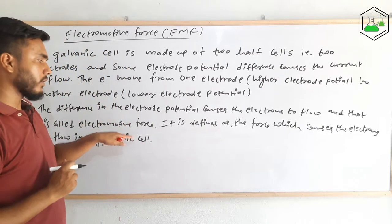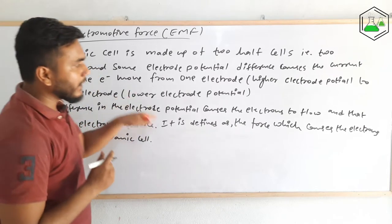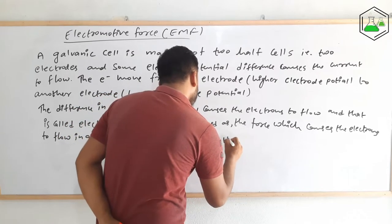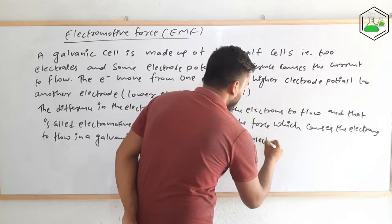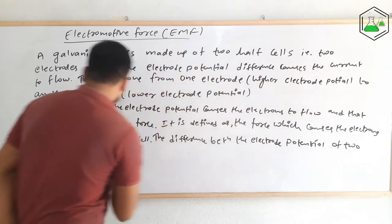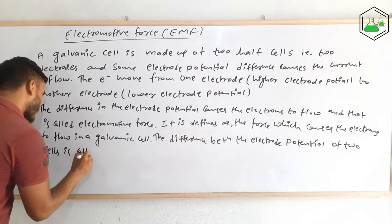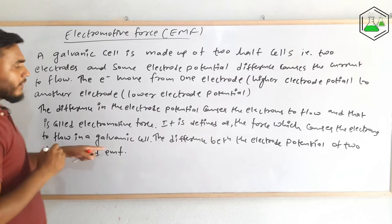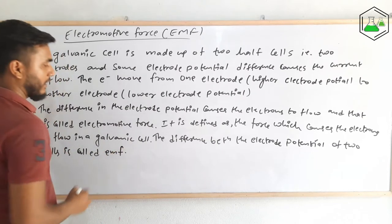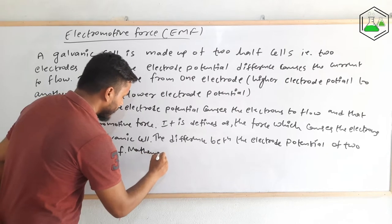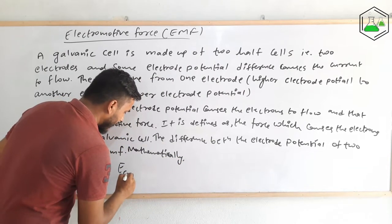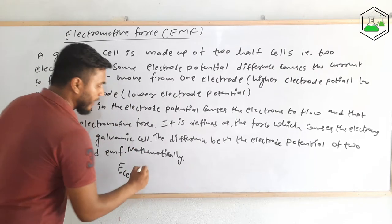EMF can also be defined as the difference between the electrode potentials of the two cells. You can use whichever definition you find easier in your examination. Mathematically, E_cell — that is the electromotive force or overall potential of the cell — can be calculated by a formula.